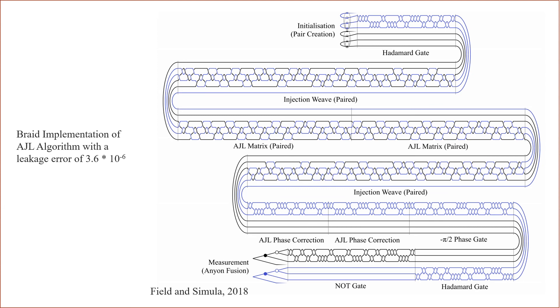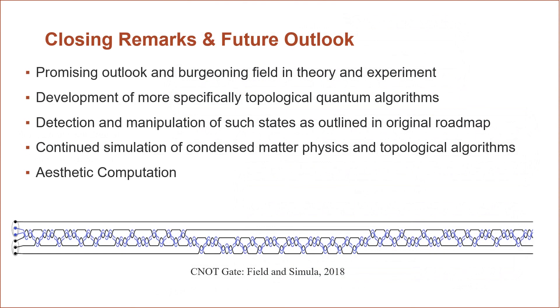And Simula in 2018 did a very in-depth simulation using MATLAB and just general theoretical briefing on how, for example, the AJL algorithm, which calculates the Jones polynomial of some knot, would look in terms of braiding. So here you can see that, and this has a leakage error of 3.6 times 10 to the negative six.